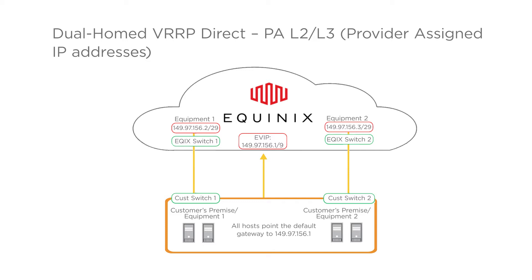If the customer wants to have more IP addresses behind that, they can purchase them from Equinix using the POF EC additional IP addresses. IPv4 choices are /28 or /27; IPv6 choices are /64 or /48.